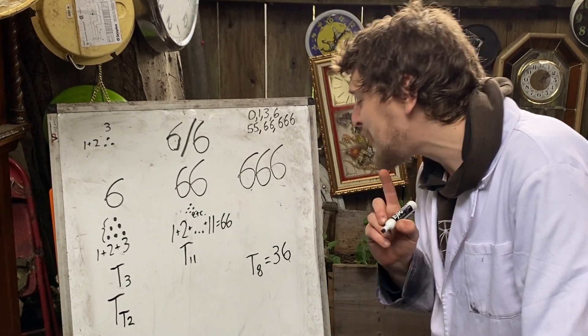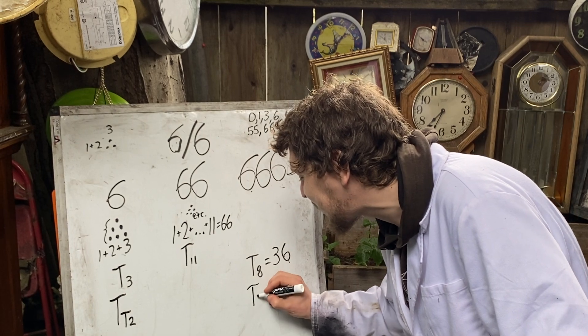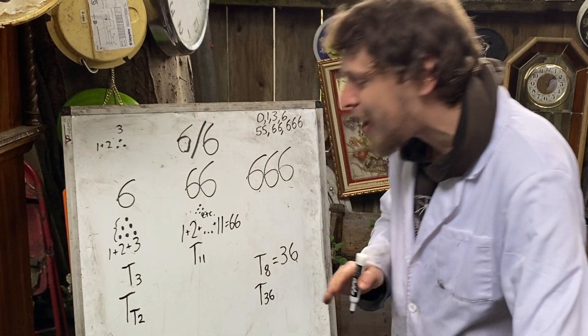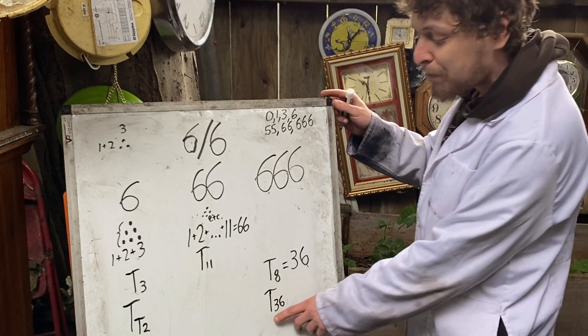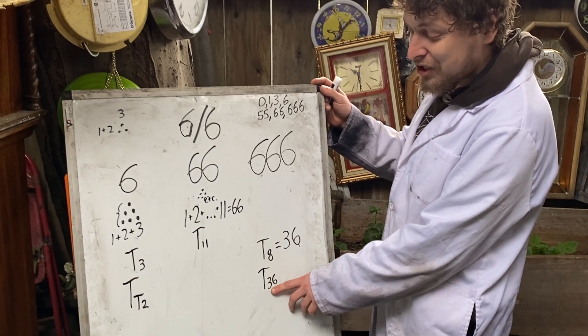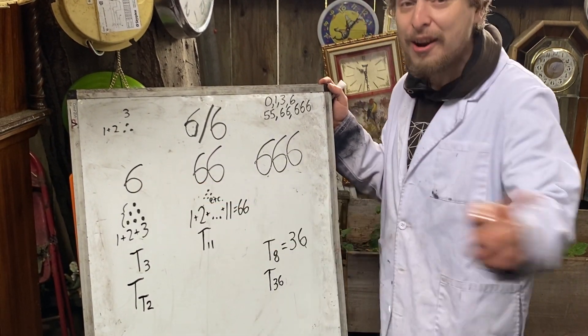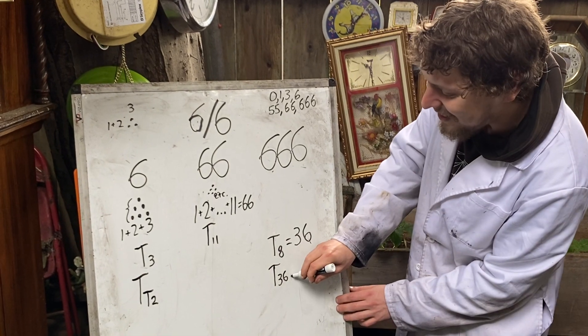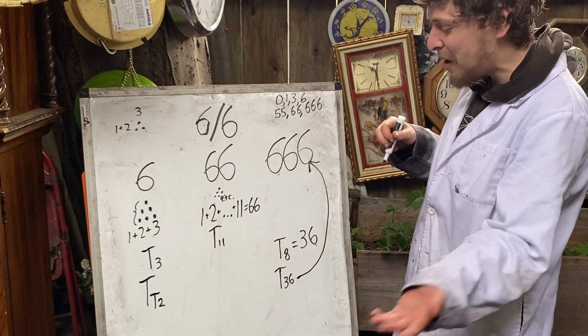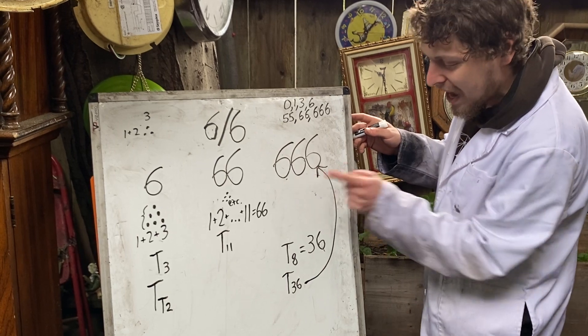And then if I look at the 36th triangular number, the sum of all the numbers up through 36, which is also 6 squared, is 666. If you add up one through 36, you get that.